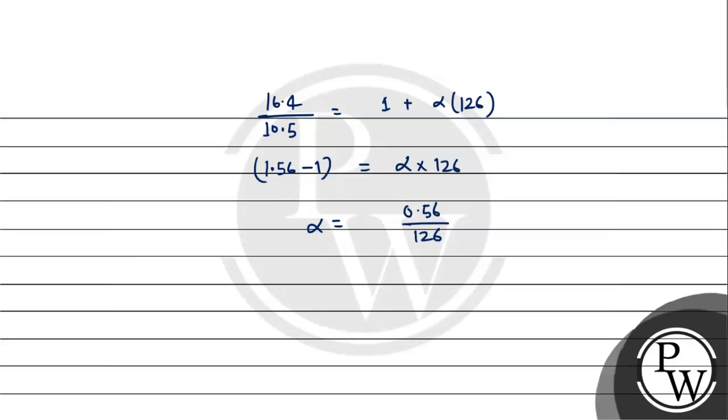0.56 upon 126, divide. Alpha equals 4.44 into 10 raised to the power minus 3 per degree Celsius.